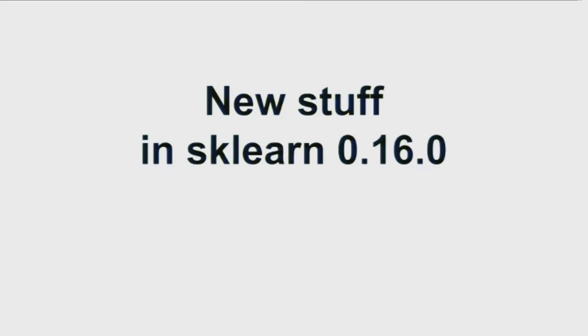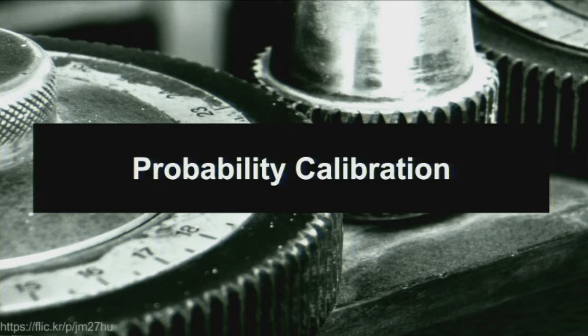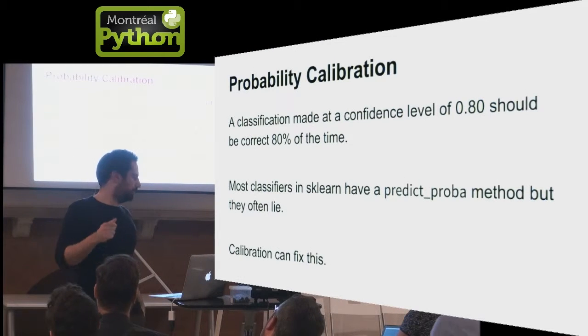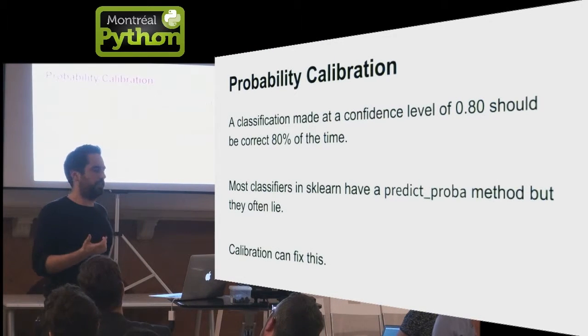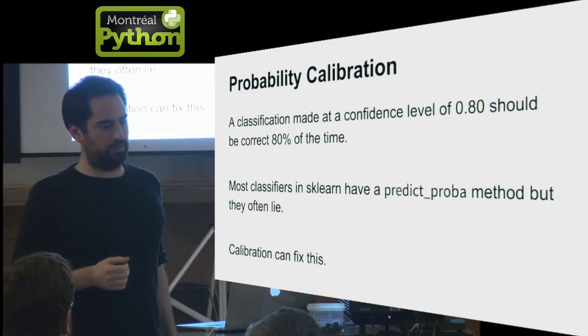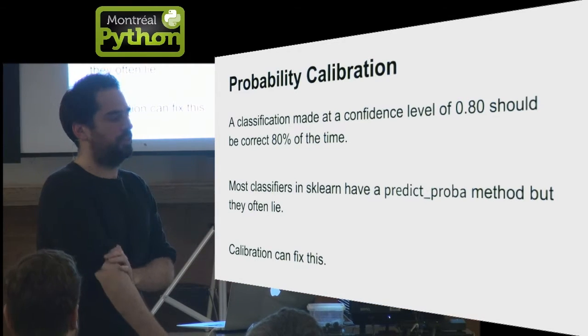In the latest release, we introduced a bunch of interesting new features. One of the first that is kind of unique to machine learning libraries is what we call probability calibration. When you train a classifier, sometimes the classifier can give you an estimate of its confidence level. But most of the time, it lies to you. The raw confidence level doesn't mean anything.